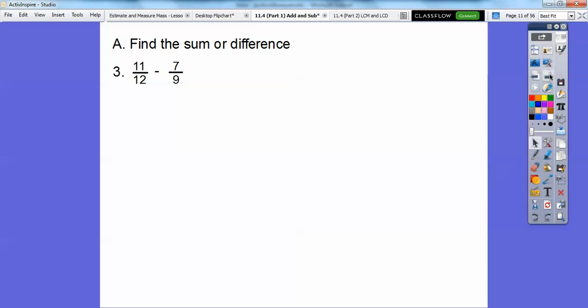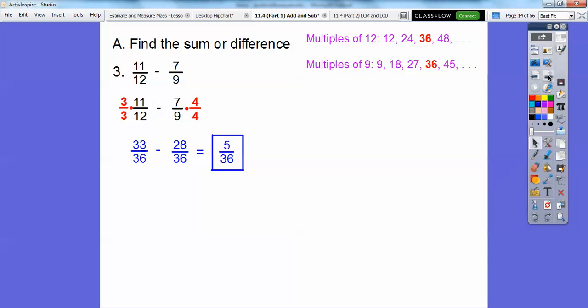Do that with this one. What I like to do if I don't know the common denominators, just start listing multiples. Multiples of 12: 12 times 1, 12 times 2, 12 times 3, 12 times 4. Here's multiples of 9: 9 times 1, 9 times 2, 9 times 3, 9 times 4. There's the common denominator right there. This is 12 times 3, so this one's going to be 3 over 3. This is 9 times 4, so this will be 4 over 4. So 3 times 11 is 33 over 36, 7 times 4 is 28 over 36. So we get 5 over 36.